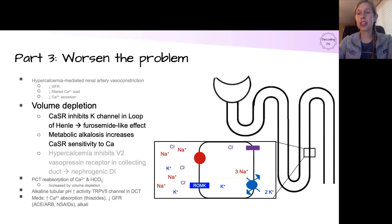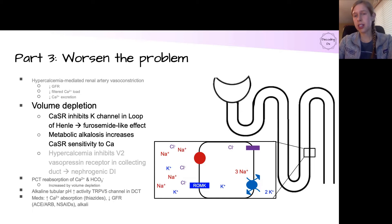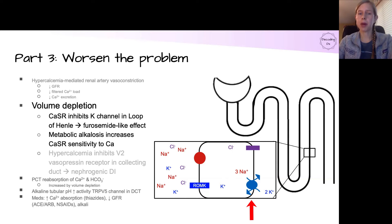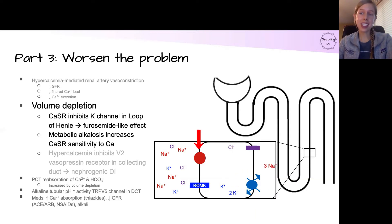Next up, we've got significant volume depletion that happens, and there are a couple different processes that contribute to this. To start off, a brief refresher on the physiology in the loop of Henle. We have the sodium-potassium pump that establishes the gradients in the cell. We then have the key NKCC pump — that is what loop diuretics work on — that brings in sodium, potassium, and chloride.